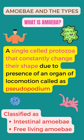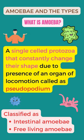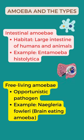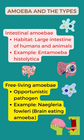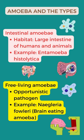Amoeba are classified as intestinal amoeba and free-living amoeba. Intestinal amoeba stay in the large intestine of humans and animals. For example, entamoeba histolytica.